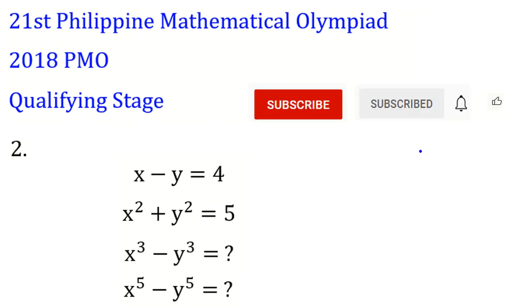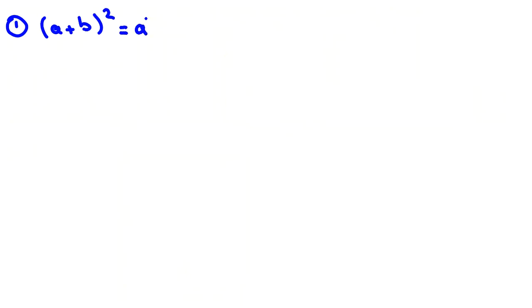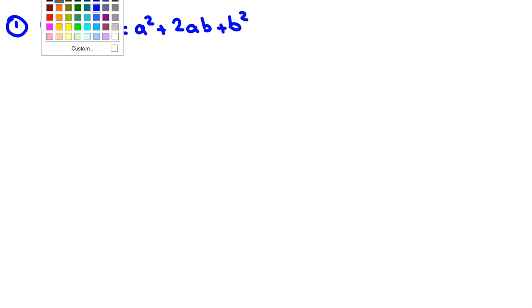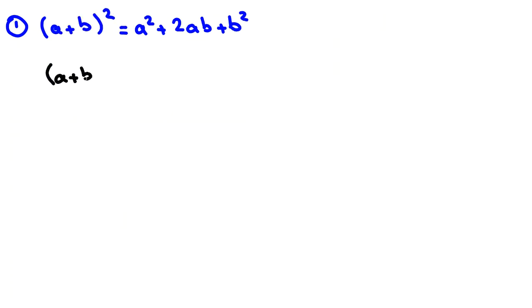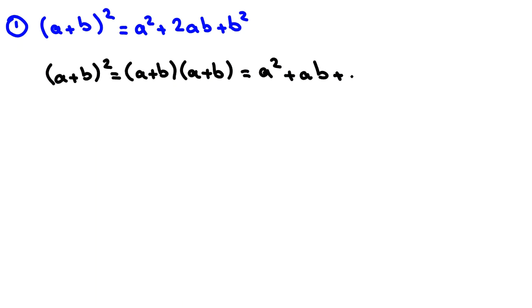The first basic identity you need is: (a + b) squared equals a squared plus 2ab plus b squared. Let's prove it. (a + b) squared equals (a + b)(a + b) equals a·a = a squared, a·b = ab, b·a = ab, b·b = b squared, which equals a squared plus 2ab plus b squared.